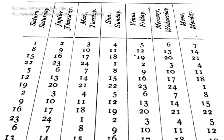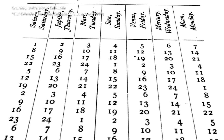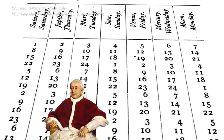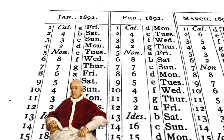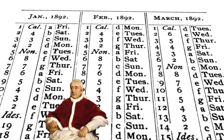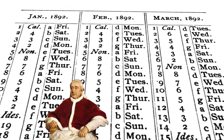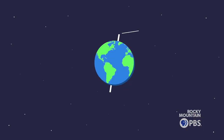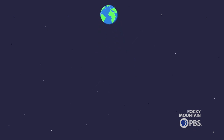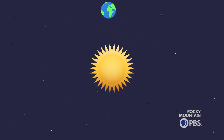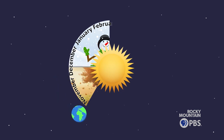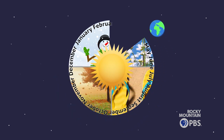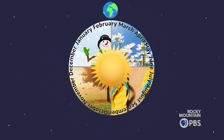Pope Gregory decided that a more accurate calendar needed to be created so that the seasons would always stay in the same months. The Earth, tilted on its axis and revolving around the Sun, creates our seasons, and we expect those to happen during certain months of our year.